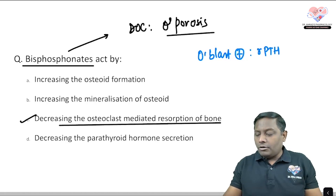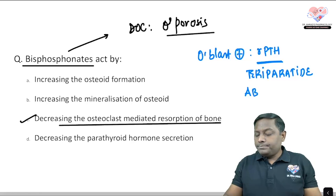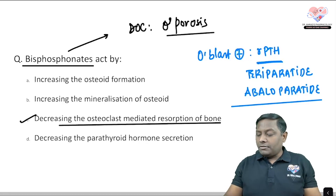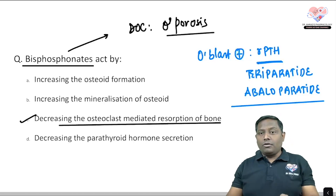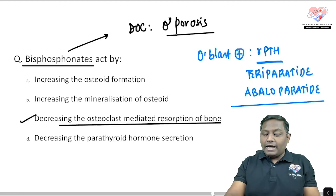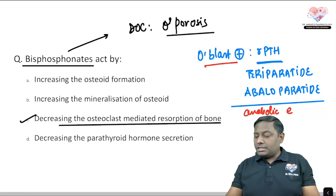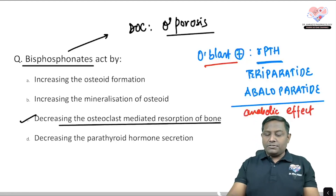Bisphosphonates do not have osteoblastic activity. The drugs that have osteoblastic activity are the recombinant parathyroid hormone analogs — drugs like teriparatide and abaloparatide. These are the drugs that actually increase osteoblastic activity and have bone anabolic activity, promoting bone growth by increasing osteoblastic activity. They do not decrease parathyroid hormone secretion, and neither do bisphosphonates.